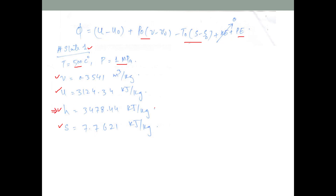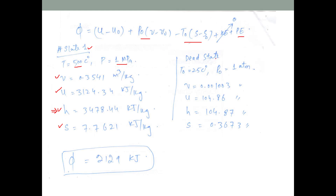At state two — the dead state — the environment is at 25°C and one atmospheric pressure. At that condition the working fluid is in the liquid water state, so we read the specific volume, internal energy, enthalpy, and entropy from the saturation properties table. Once all properties are obtained, substituting into the equation gives the exergy of the steam as 2129 kJ — the maximum work output that steam can deliver.